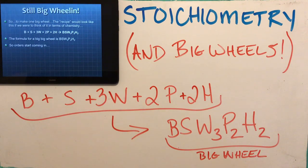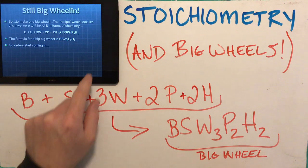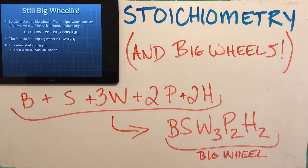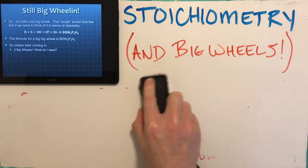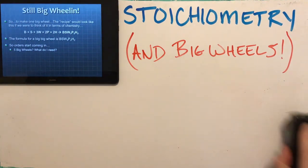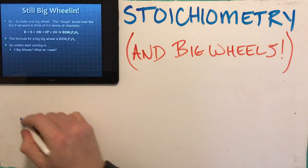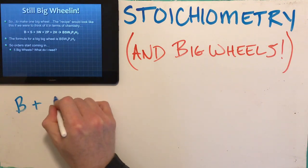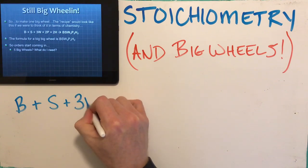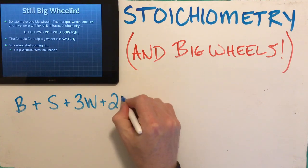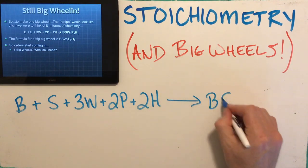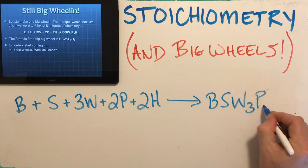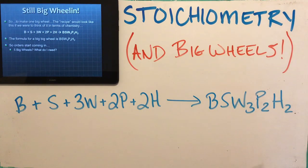Orders start coming in for my big wheel. The first order: five big wheels. So what am I going to need? I'll draw this out quickly: B + S + 3W + 2P + 2H → Big Wheel. Nice and neat.